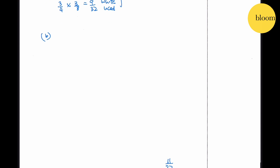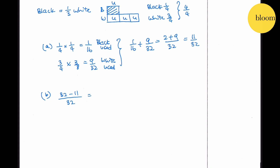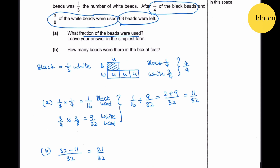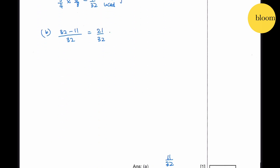Question 8b: How many beads were in the box at first? Fraction remaining = 32/32 − 11/32 = 21/32. We know 21/32 of total = 63 beads. Therefore total = 63 × 32 ÷ 21 = 96 beads altogether.